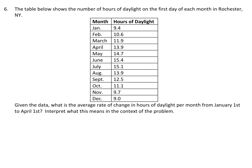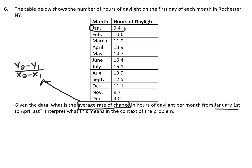Number six — they're talking about the number of hours of daylight on the first day of each month in Rochester. They want us to find the average rate of change. Here is our average rate of change formula, so we know we're going to be using this. They want us to find the average rate of change in hours of daylight per month from January 1st until April 1st.